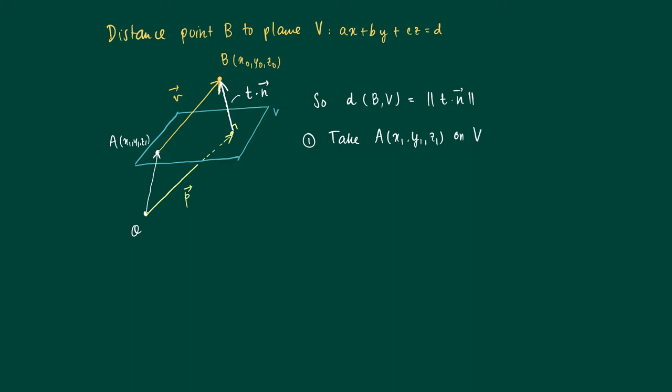So first take a point A(x1, y1, z1) on V. Now form the vector V which is AB, and this is given by x0 minus x1, y0 minus y1, z0 minus z1.